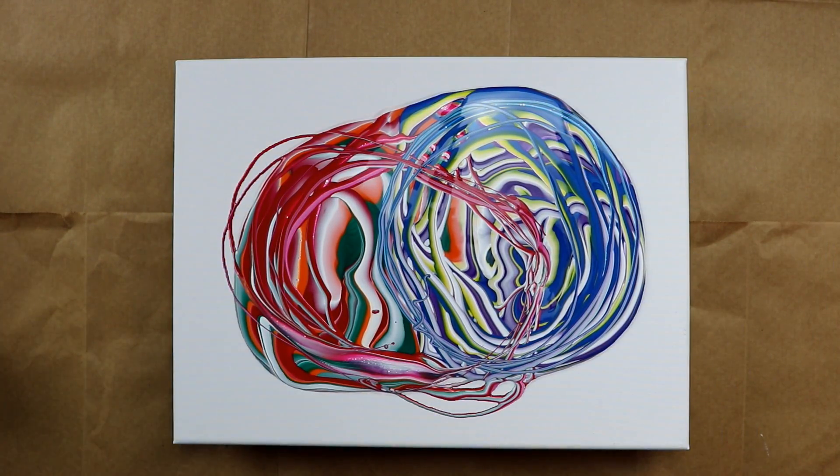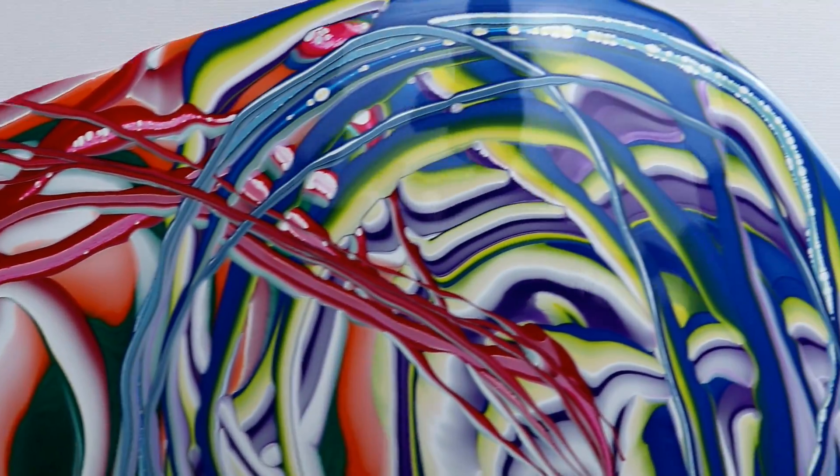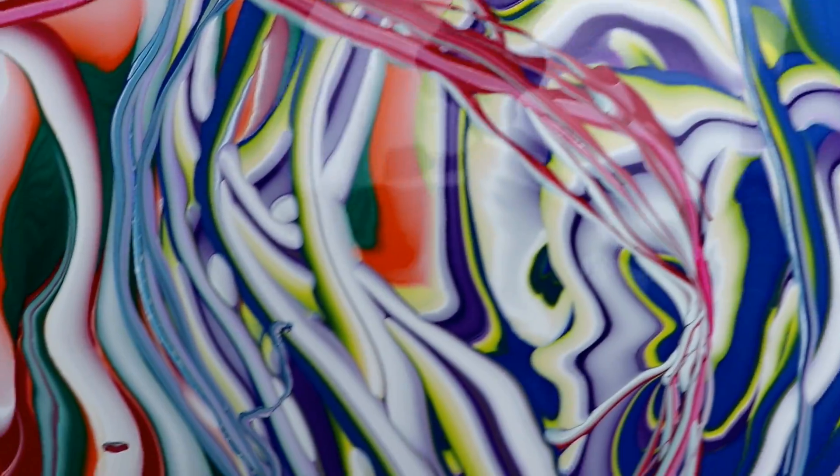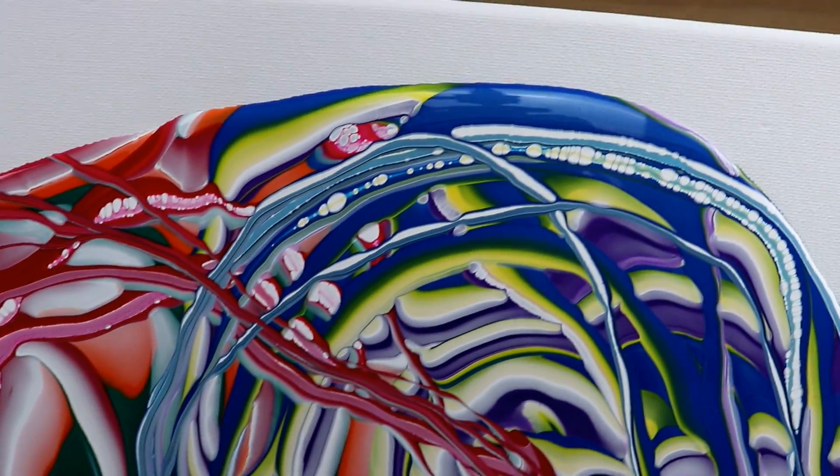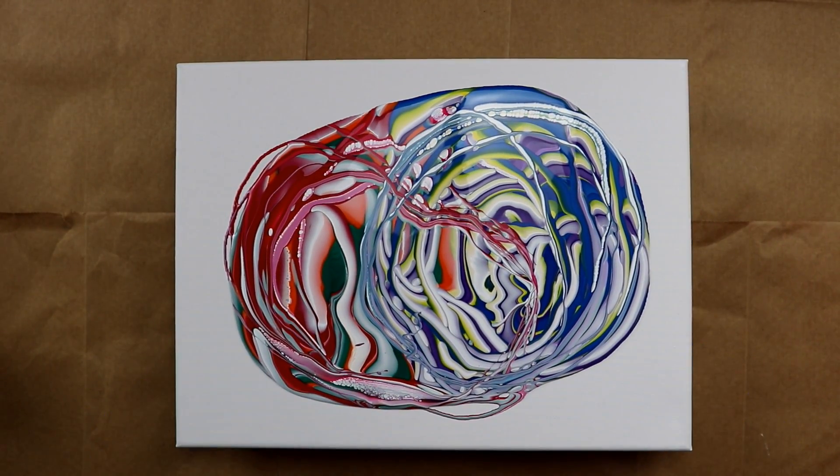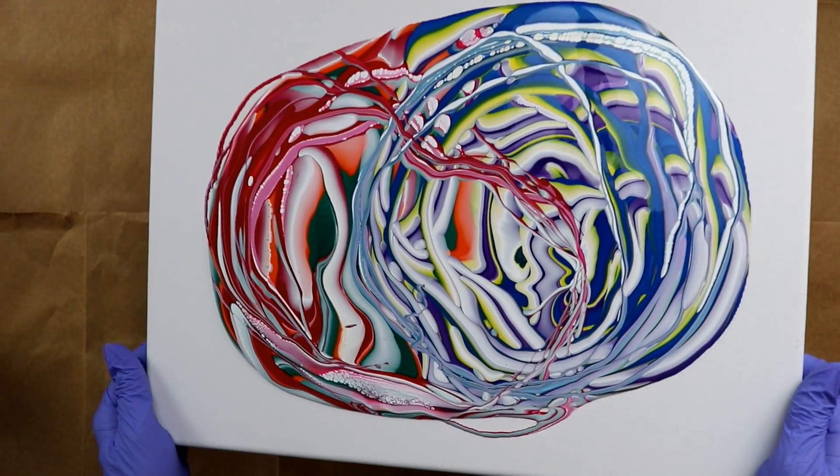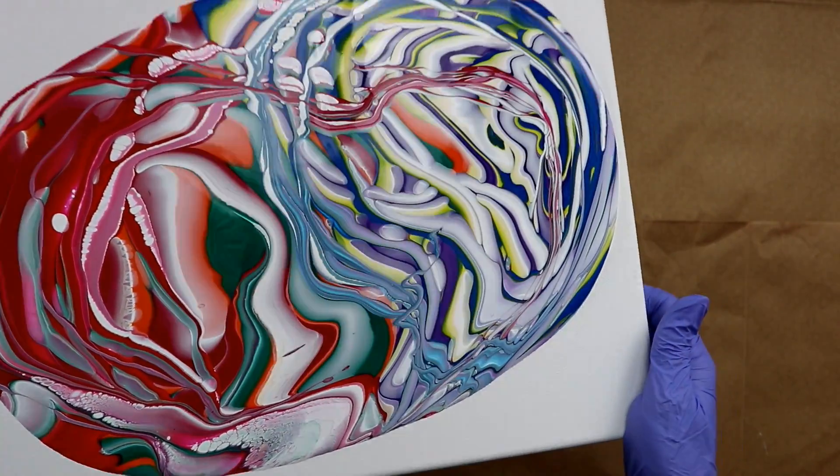All right, so I kind of got some cool stuff going on. You can see there's some cells. A little bit of cloud effect is happening there, too. All right, so I'm just going to start moving it around. It's really crazy like a ribbon, you know, like a ribbon pour.